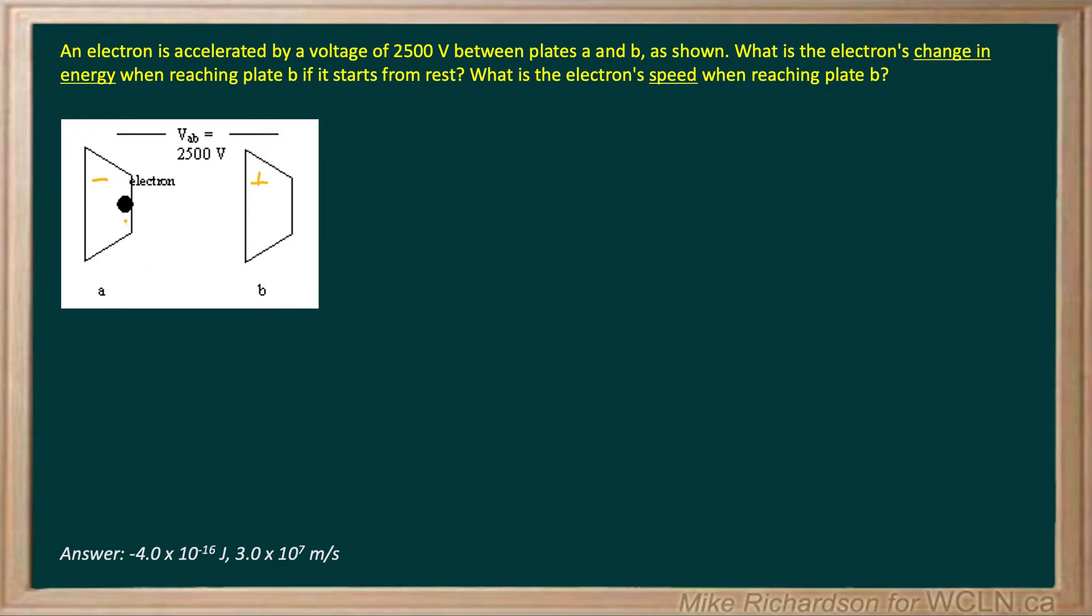So the electron, which is a negative charge, is really close to this negative plate. It wants to be repelled from that plate and attracted towards the positive plate.